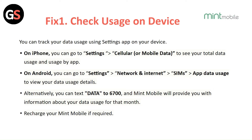Check usage on device. You can track your data usage using the settings app on your device. On iPhone, go to Settings, then Cellular or Mobile Data, to see your total data usage and the usage by app. On Android, go to Settings, then Network and Internet, then select the SIM app data usage to view the data usage details.